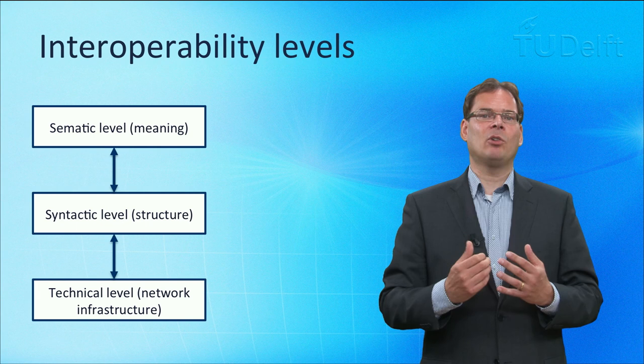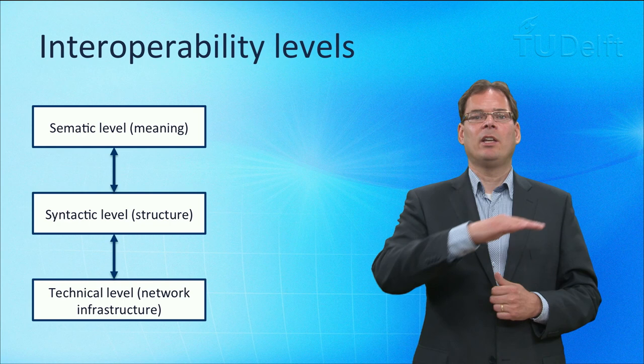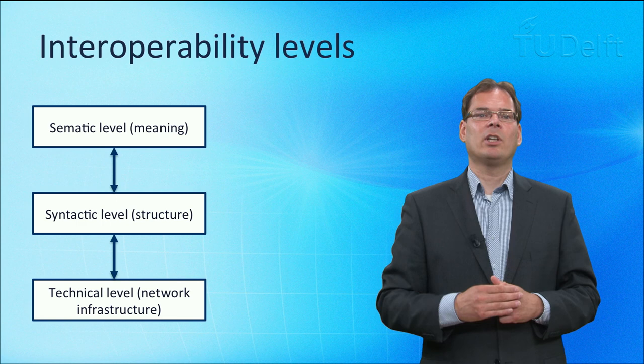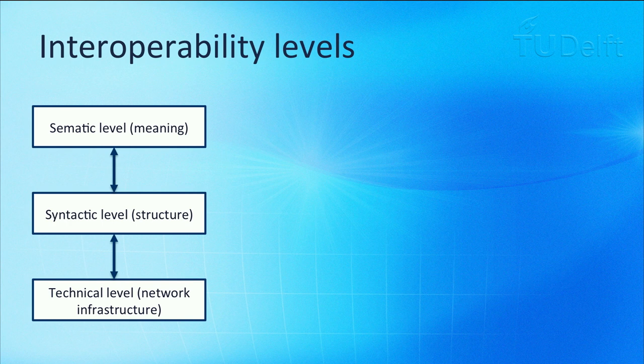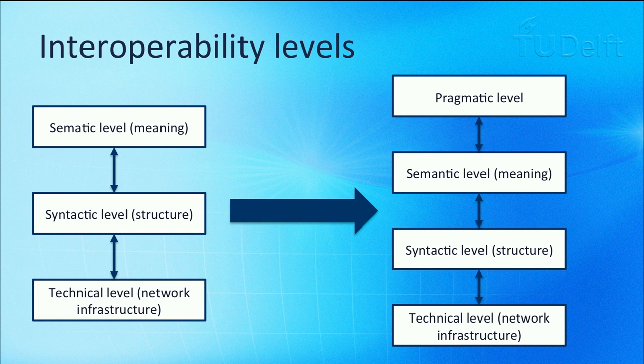Technical interoperability refers to network connectivity. Syntactic interoperability refers to the structure and adherence to standards. The level of semantic interoperability takes care that information is interpreted in the same way. Sometimes a fourth level is added on top — this level is called the pragmatic level. Let's take a look at each level.